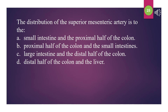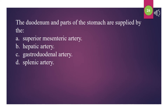The distribution of the superior mesenteric artery is to the: A. Small intestine and the proximal half of the colon. B. Proximal half of the colon and the small intestines. C. Large intestine and the distal half of the colon. D. Distal half of the colon and the liver. The answer is B: Proximal half of the colon and the small intestines. The duodenum and parts of the stomach are supplied by the: A. Superior mesenteric artery. B. Hepatic artery. C. Gastroduodenal artery. D. Splenic artery. The answer is C: Gastroduodenal artery.